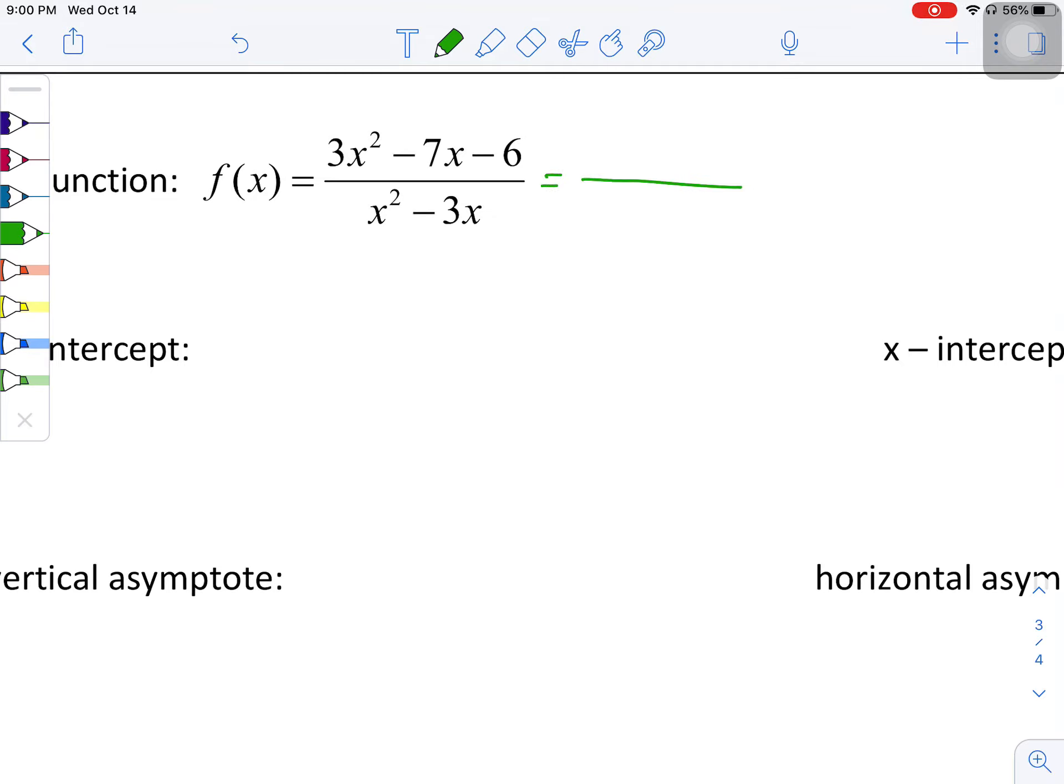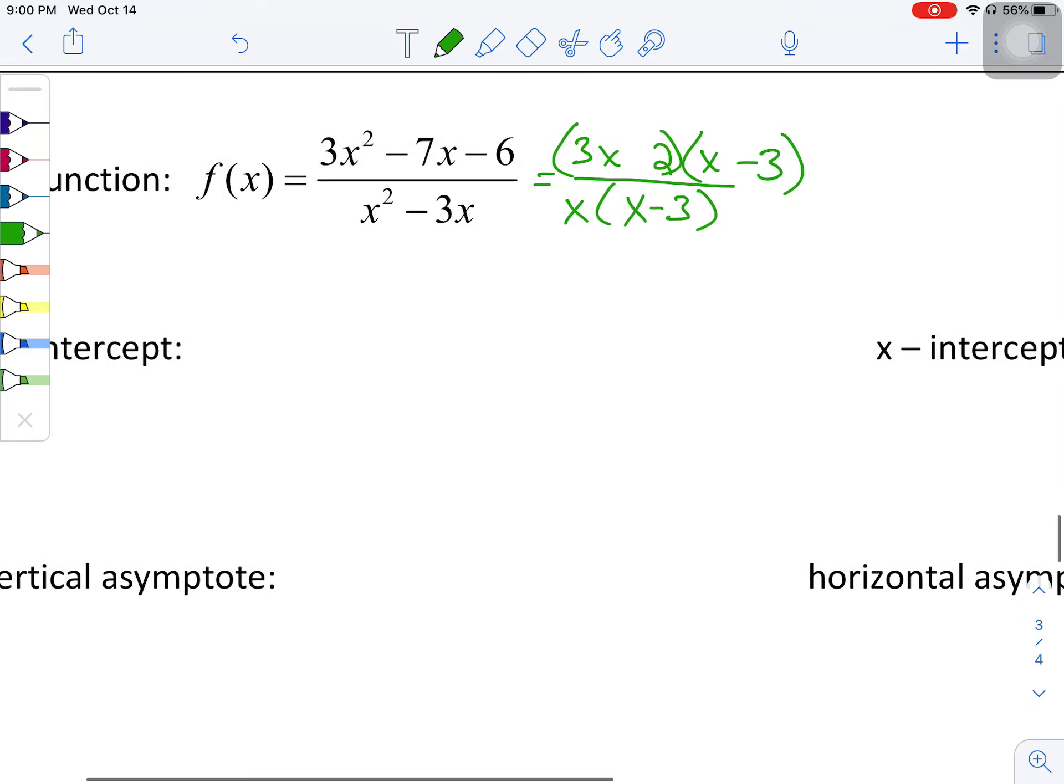The denominator is going to be the one that my brain just says, let's do that one first. So x minus three. Numerator, I'm going to do a little guess and check here. So I think if I do three here and a two here, let's make that negative and that positive. Quick double check. Three x squared minus nine x plus two x is the minus seven x. And yes, okay.